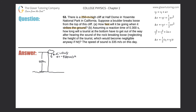We also know the displacement that this rock will be traveling — it's going to be negative 250 meters. Why negative? Because the rock is moving in the negative y direction, therefore the displacement will be a negative value. What else do we know? We don't know the total time it'll take, nor do we know the final velocity.